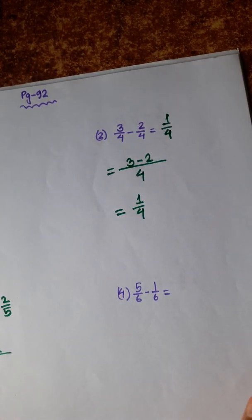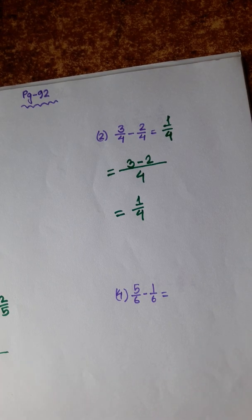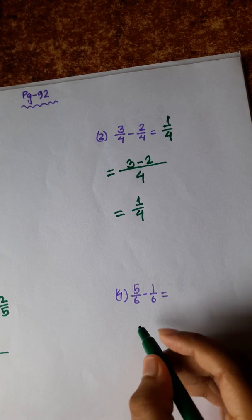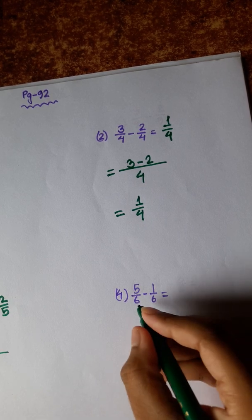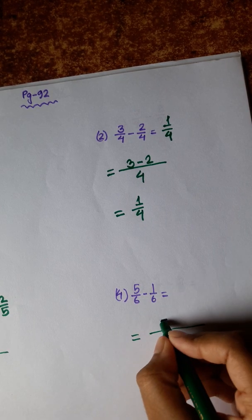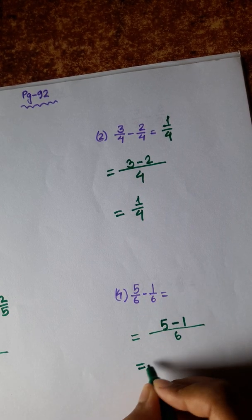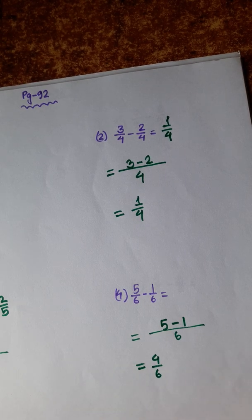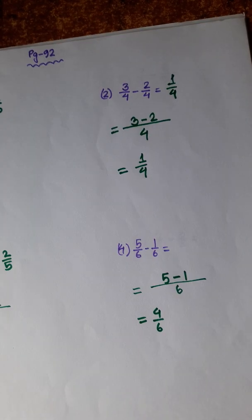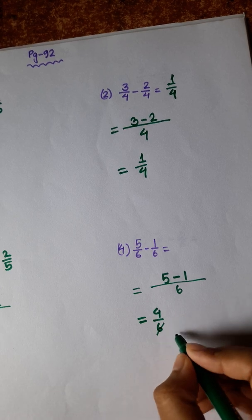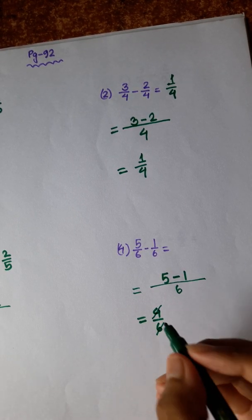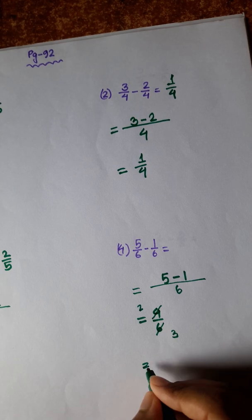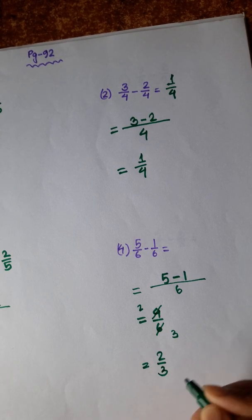Next: denominator 6. 5 minus 1 equals 4 by 6. 4 by 6 can be simplified by dividing by 2: 6 divided by 2 equals 3, and 4 divided by 2 equals 2. So the answer is 2 by 3.